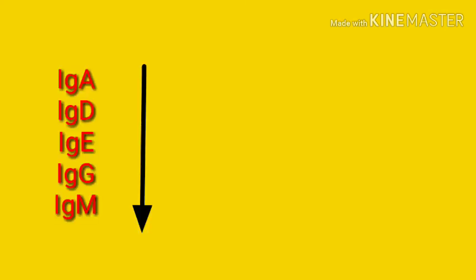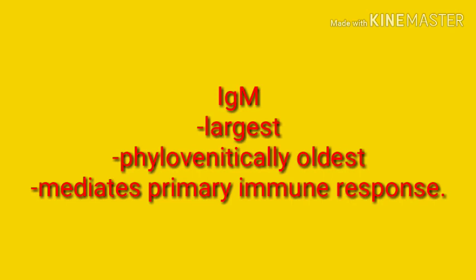For IgM, it is the largest immunoglobulin. It is easy to remember because if you write the immunoglobulins in alphabetical order from top to bottom — A, E, G, M — IgM is at the bottom and is the largest. If you know the alphabet, you won't forget that IgM is the largest immunoglobulin.